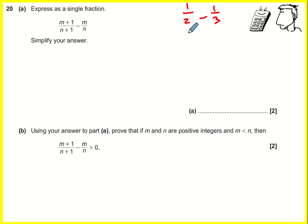If I want to get this first fraction over 6, I'm going to need to multiply top and bottom by 3. If I want to get this one over 6, times top and bottom by 2. It's 3 over 6 minus 2 over 6 and that equals 1 over 6.